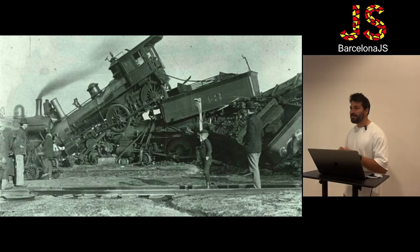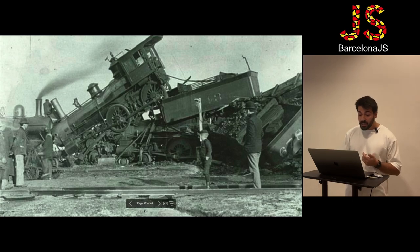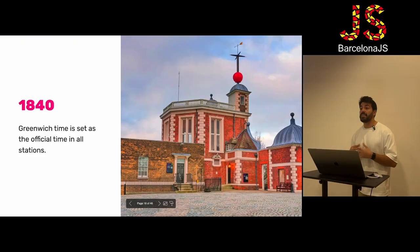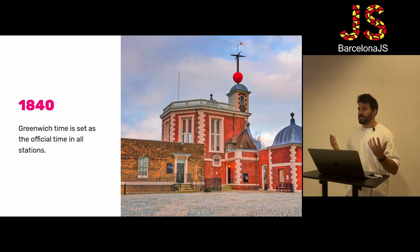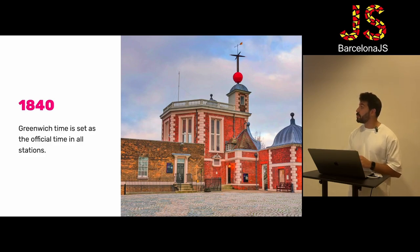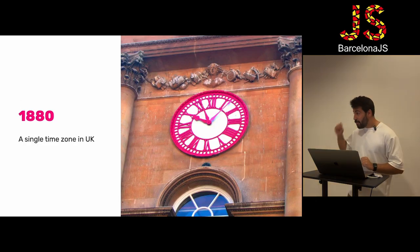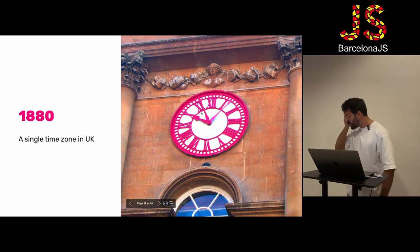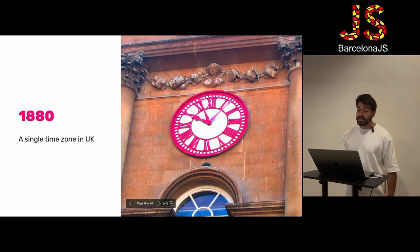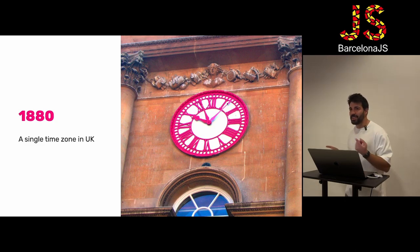There were a lot of train crashes because of this. That's why, for the first time, the UK railway company decided to standardize time across all stations using Greenwich as the official time — because otherwise it was impossible to control the trains. It took 40 years to adopt a single standard time in the UK. If you go to the Bristol Stock Exchange, you can still see a clock with two hands: one for the local time in Bristol and another for Greenwich time, which was a 10-minute difference.